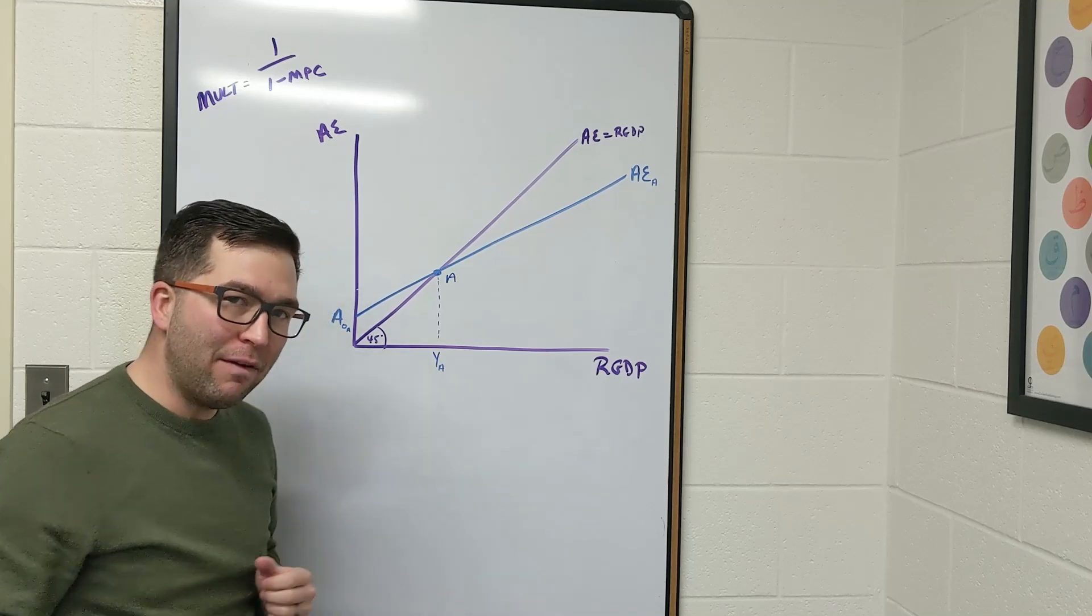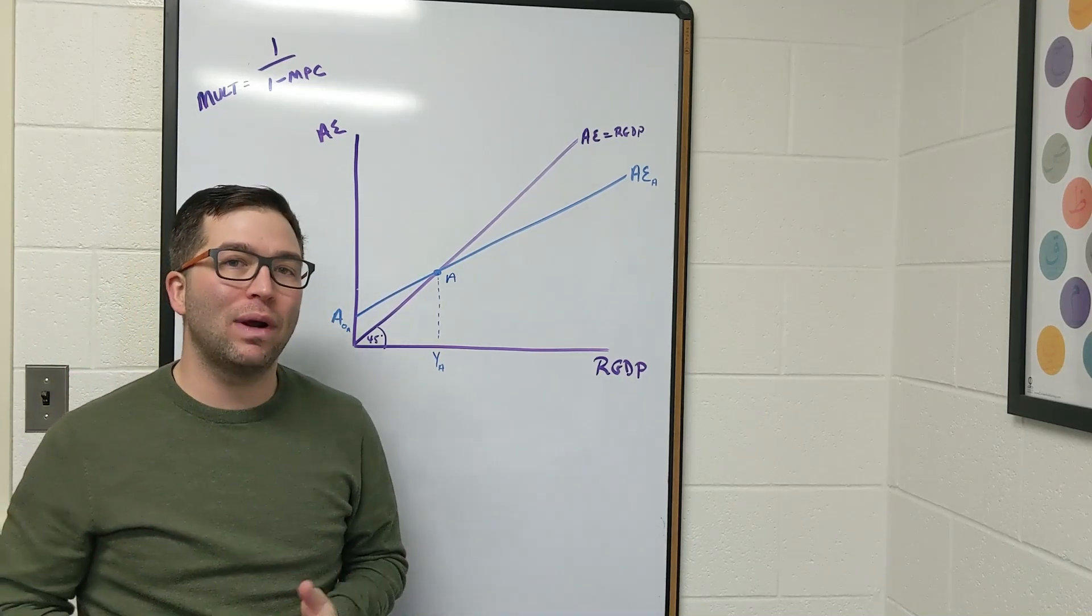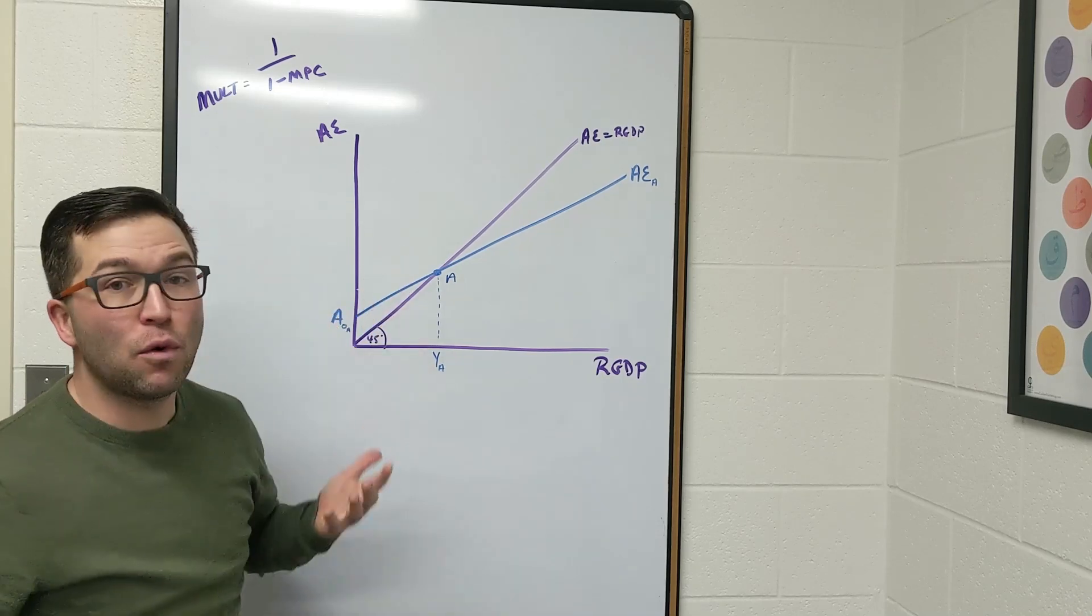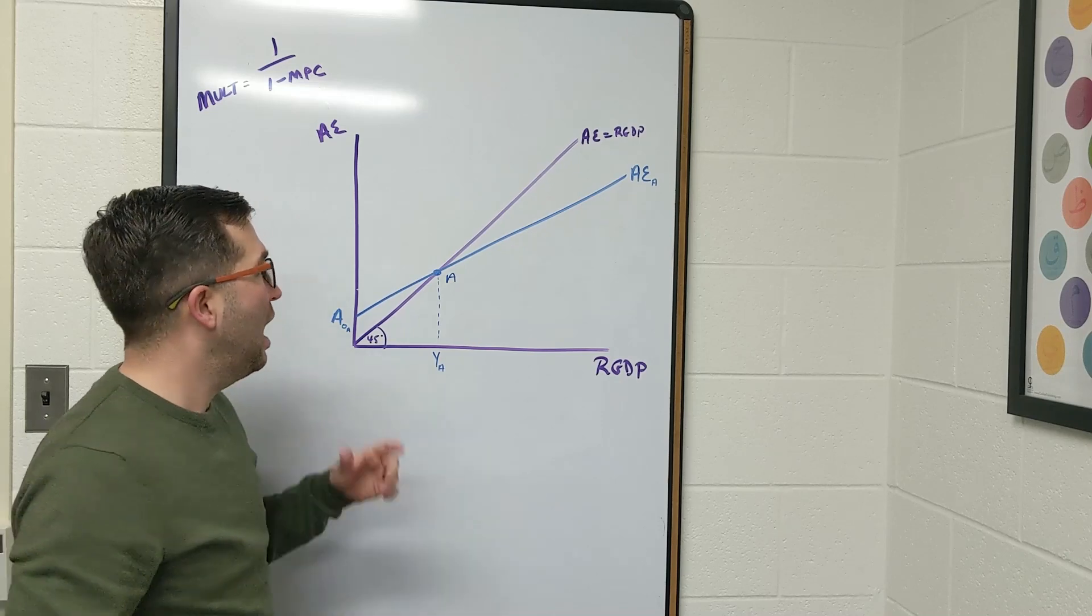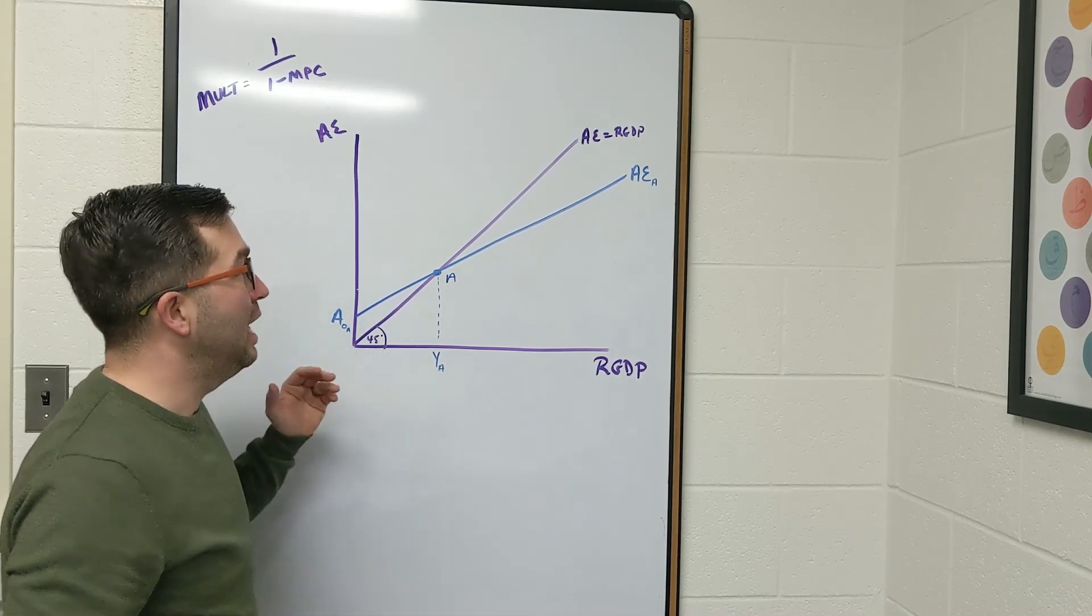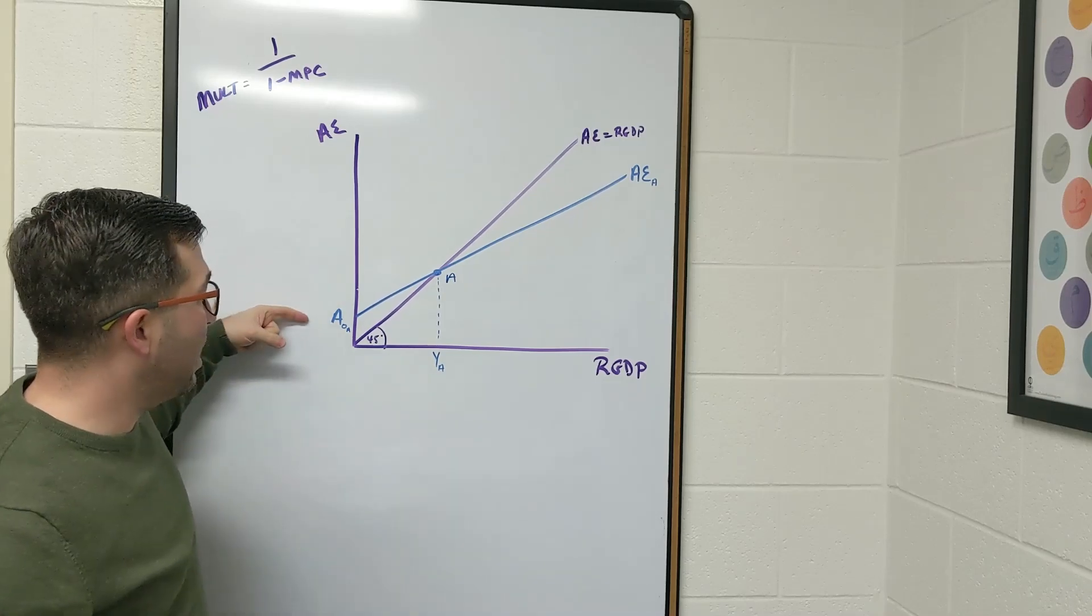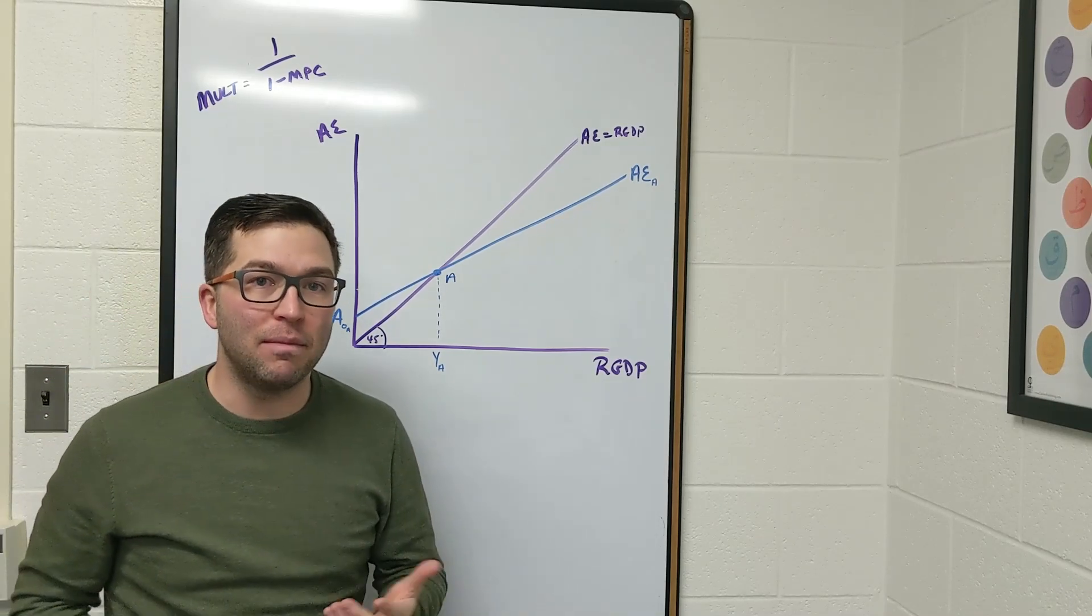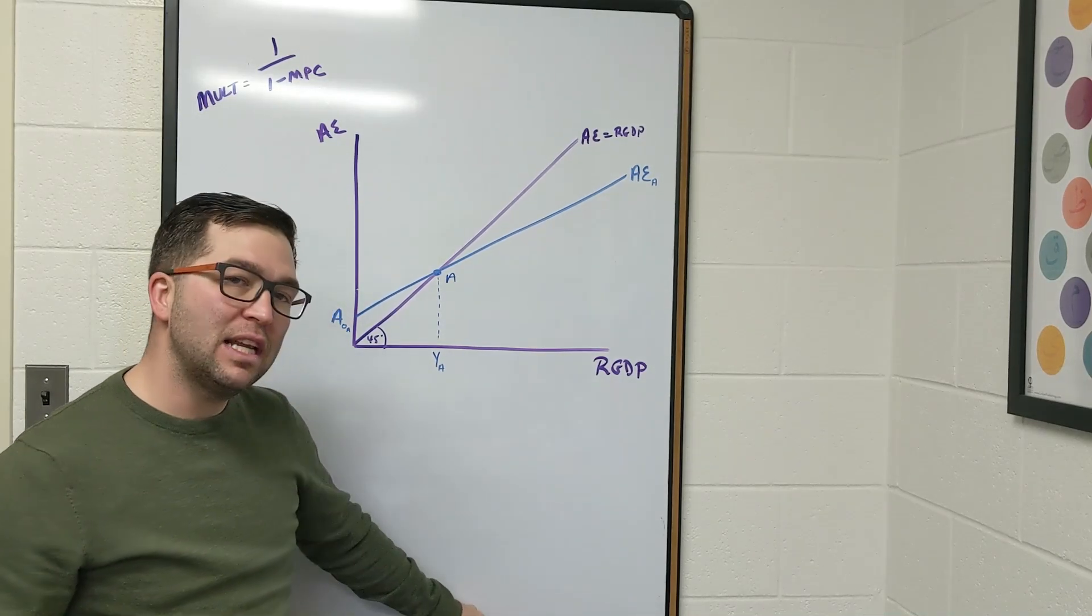What I have up here is our initial point A where we're in the macroeconomic equilibrium using this 45-degree diagram that we've been working with so far in this lesson. As you can see, we have the aggregate expenditure function already drawn up here. It has an upward slope of the marginal propensity to consume and it's starting at some level of autonomous spending.